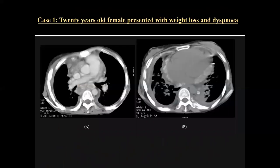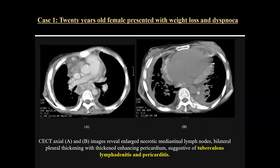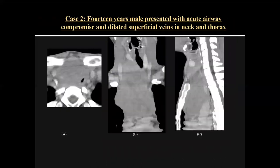Case one was a 20-year-old female with weight loss and dyspnea. On the contrast-enhanced axial CT image, there were enlarged necrotic mediastinal lymph nodes and bilateral pleural thickening with a thickened enhancing pericardium. This was a case of TB lymphadenitis with pericarditis.